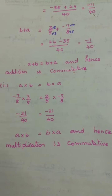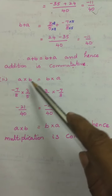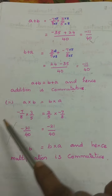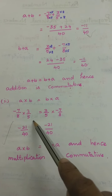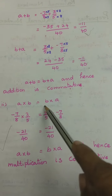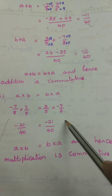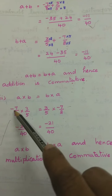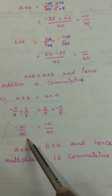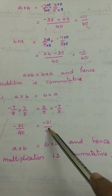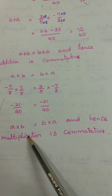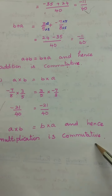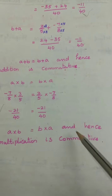Now we shall see multiplication. A into B is equal to B into A. A is minus 7 by 8 and B is 3 by 5. A into B equals minus 7 by 8 into 3 by 5 — no need to see LCM for multiplication. That gives minus 21 by 40. For B into A: 3 by 5 into minus 7 by 8 also gives minus 21 by 40. So A into B is equal to B into A, and hence multiplication is commutative.